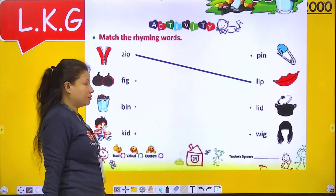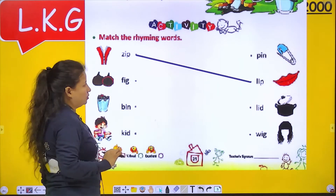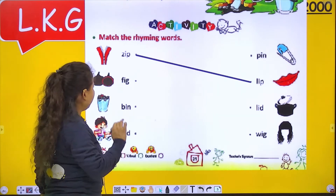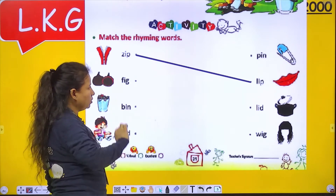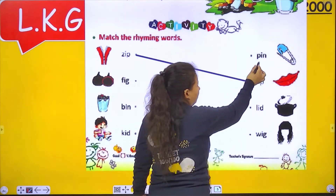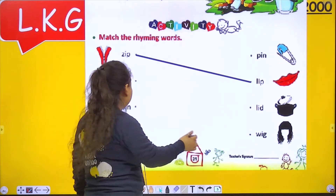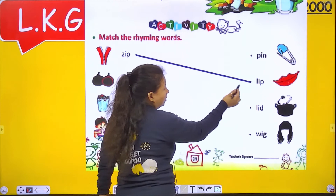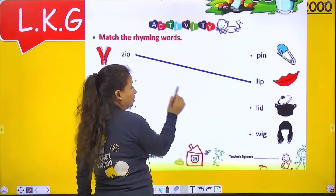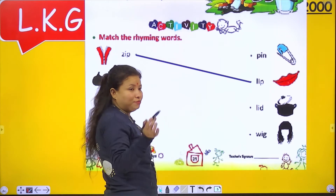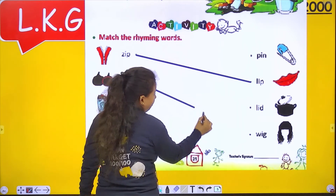Now which picture is this? Fake. And like fake, we have to find out another rhyming word. Fake and pin don't match. Fake, lip — no. Fake, lit — no. Fake, wick — both have the same sound. Fake, wick.